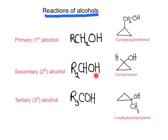If it is a secondary carbon, the carbon that bears the OH is bonded to two carbons. If it is a tertiary alcohol, the carbon that bears the OH is bonded to three carbons. This is a primary alcohol because this carbon is only bonded to one carbon — it doesn't matter that there may be two other carbons or seven carbons, this is still a primary alcohol. This is a secondary alcohol because the carbon bonded to the hydroxyl group is bonded to two carbons. This is a tertiary alcohol because the carbon bonded to the hydroxyl group is bonded to three carbons: one, two, three.